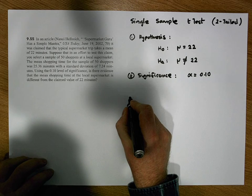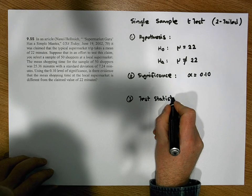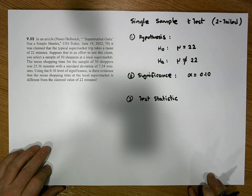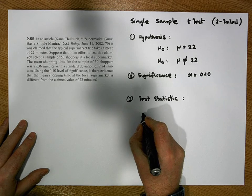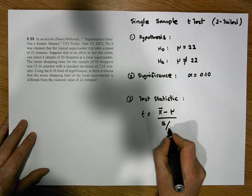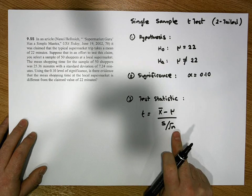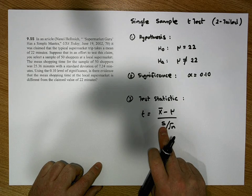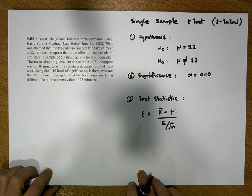The next stage is our test statistic, where we calculate how far our evidence is away from our hypothesized center of the distribution. We're going to do a single sample t-test, so our test statistic is: t = (x̄ − μ) / (s / √n). To calculate the test statistic there are four values we require.